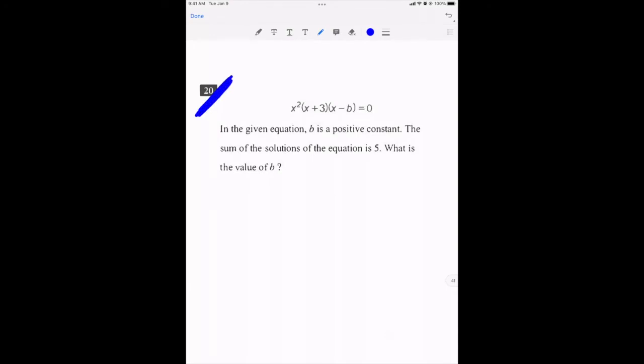All right, last problem on the section, number 20. Let's start off by talking about a very basic fact first. If I've got the numbers A times B, and I'm multiplying them together, and I'm getting zero...